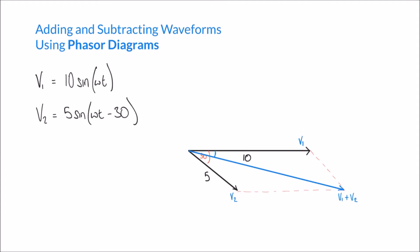The method is very similar. When we originally set up our diagram, we said that by default a phasor points to the right horizontally, and if it has a positive phase shift it would tilt upwards. If it has a negative phase shift like v2 at minus 30 degrees, it tilts downwards by that angle. In this video we're looking for v1 minus v2 rather than adding them.